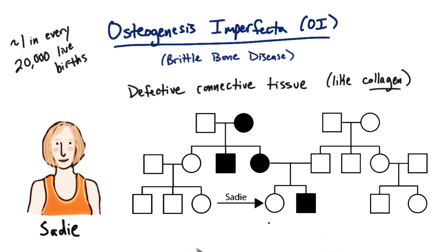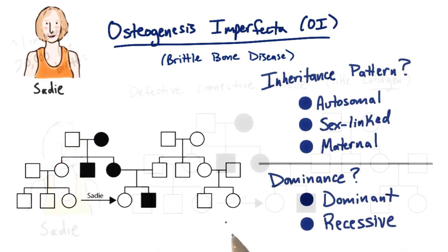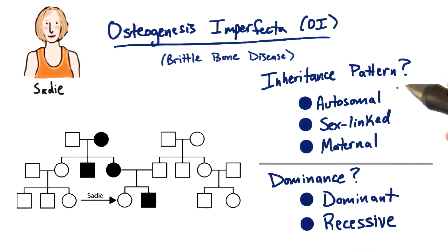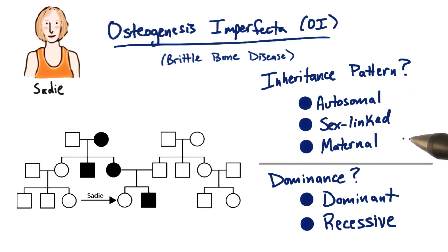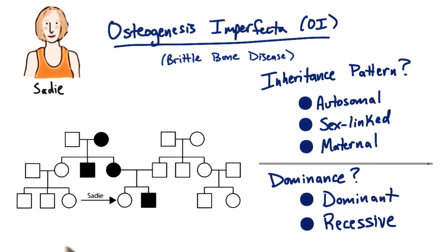Just like we've done for the last two traits, before we get into the genetic cause here, I want you to tell me about the inheritance pattern of OI based on the pedigree shown. Tell me if you think this trait resembles an autosomal, sex-linked, or maternal inheritance pattern, and whether you think it's dominant or recessive. If you have trouble answering, you can go back and check out lesson five where we first learned about pedigrees and dominance.